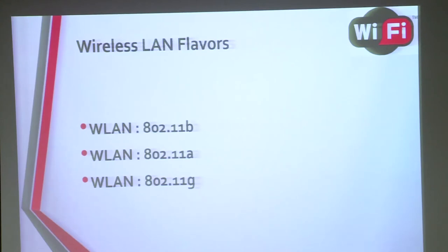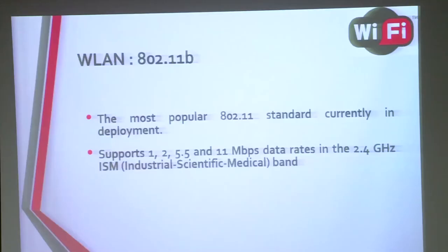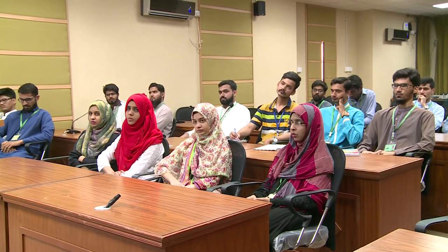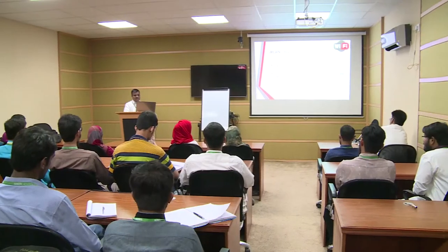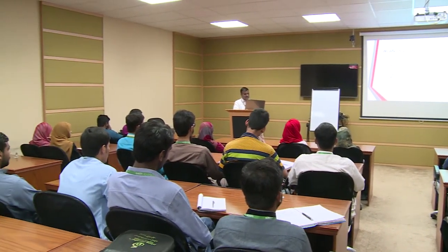Now, the flavors of Wi-Fi. There are basically three flavors: 802.11b, 802.11a, and 802.11g. They differ from each other with respect to certain parameters. For example, 802.11b is the most popular standard currently deployed and is working on 2.4 GHz. This frequency comes under the ISM band — Industrial, Scientific and Medical band. It is a free worldwide band, so in every part of the world you can use it without any charges. Most Wi-Fi devices we use in our homes operate on 2.4 GHz. The second flavor, 802.11a, operates on the 5 GHz unlicensed national information infrastructure band, which can vary country to country.